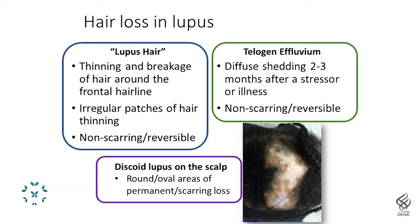I put hair loss in lupus into three categories. The first is just called lupus hair — people with systemic lupus tend to get thinning and breakage of their hair, especially around the frontal hairline. That's non-scarring, meaning it's reversible when the disease calms down. This is quite similar to telogen effluvium, which can occur in lupus or any illness: when the body is under medical or psychological stress, it shocks all your hair into a resting phase, and two to three months later it sheds in large amounts — but again, it is reversible and the hair will grow back.